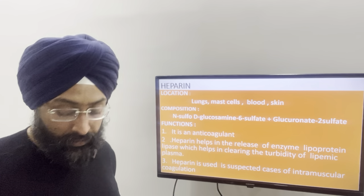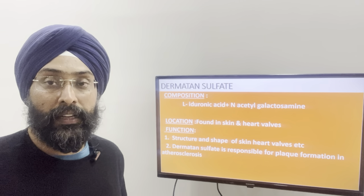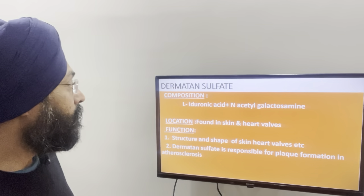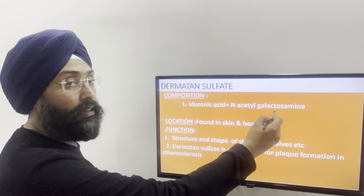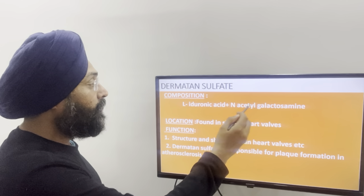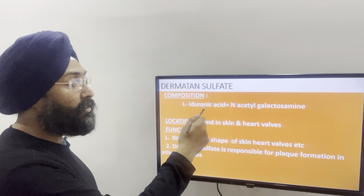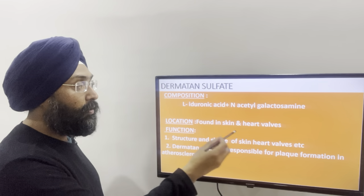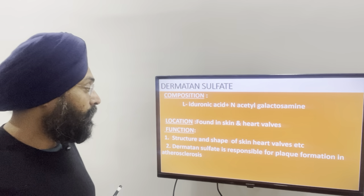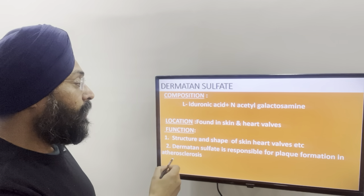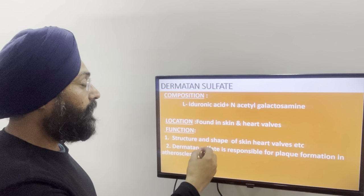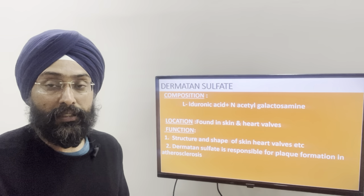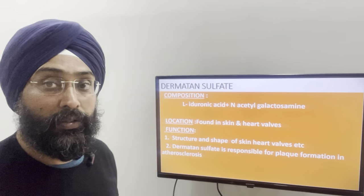The fourth mucopolysaccharide is dermatan sulfate — D in the code HCHDK. Its composition is L-iduronic acid and N-acetyl galactosamine. So again, the minor sugar is galactosamine, and in place of D-glucuronic acid, we have L-iduronic acid. Its location: it is found in skin and heart walls. Its function is to help maintain the structure and shape of the skin and heart walls. Besides this, dermatan sulfate is responsible for plaque formation in atherosclerosis.